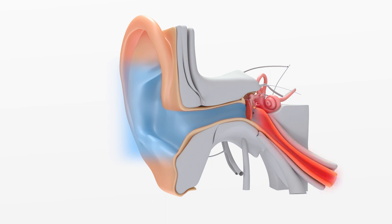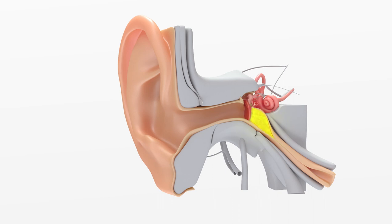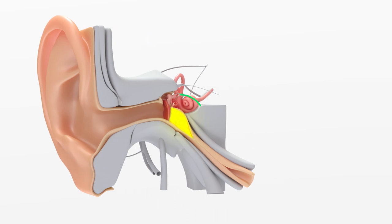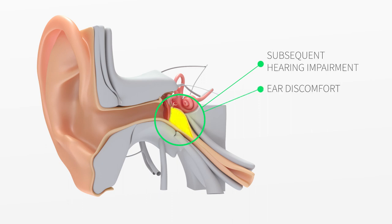If the eustachian tube is blocked or swollen and not open properly, a vacuum will be developed, drawing fluid into the middle ear. This condition may cause a sticky, glue-like effusion to develop in the middle ear, with subsequent hearing impairment and ear discomfort, known as otitis media with effusion OME, or glue ear.